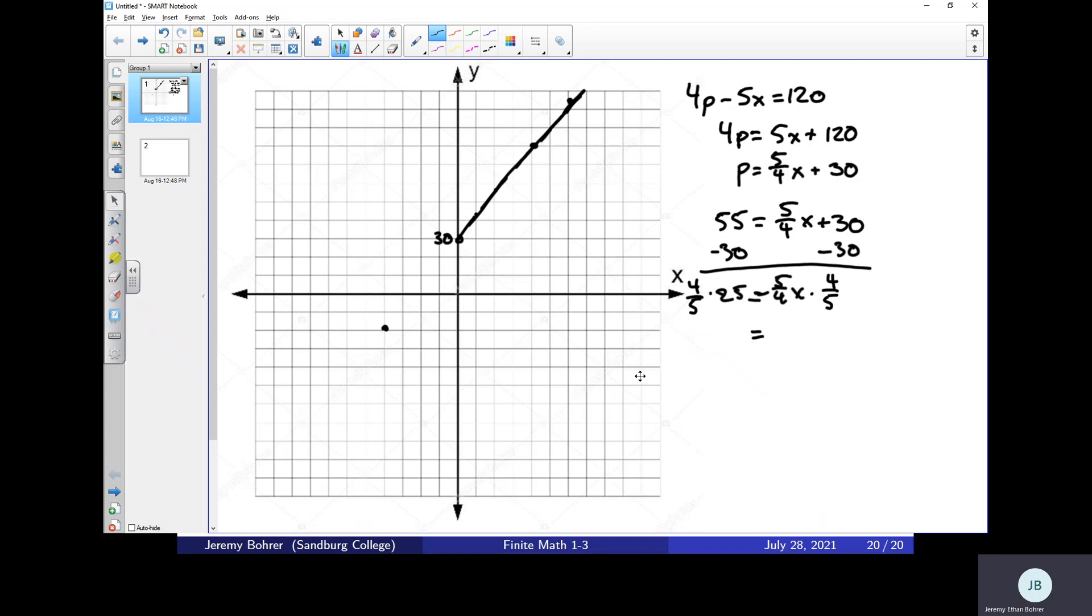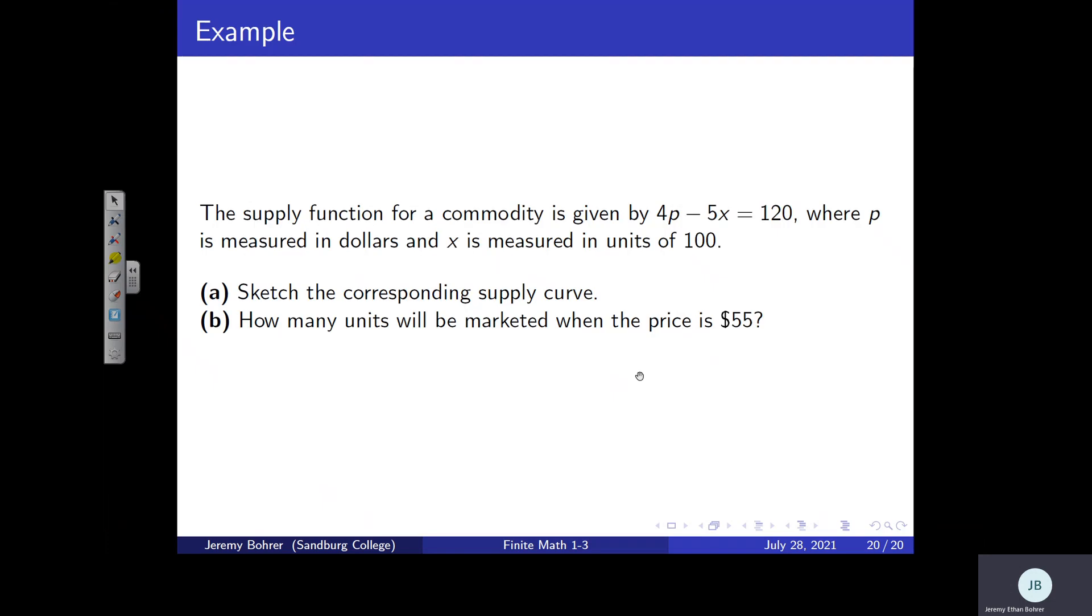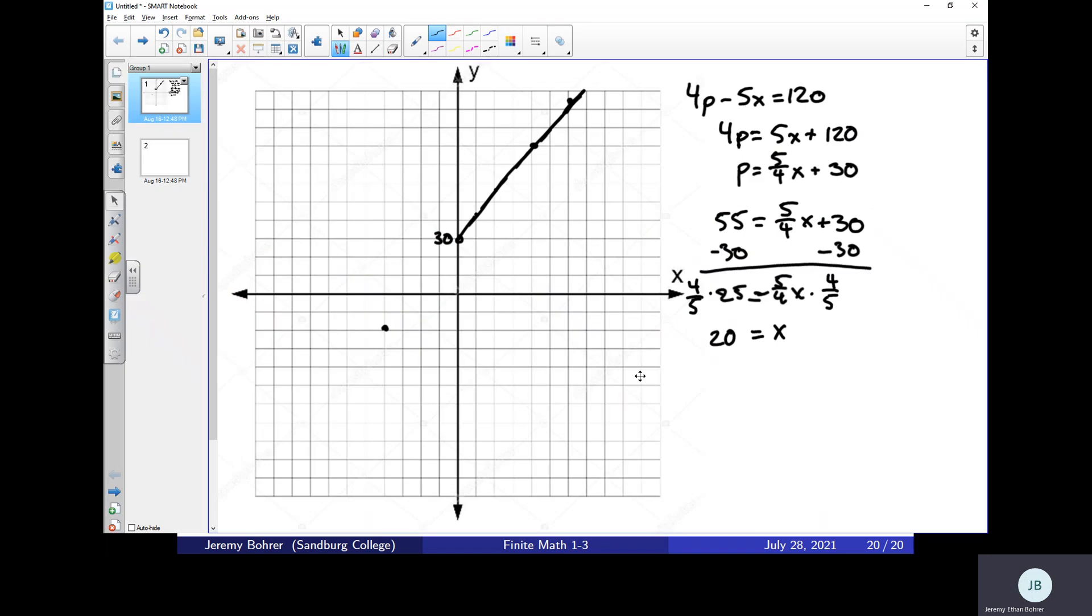Well, 4 fifths times 5 fourths X is just X. 4 fifths of 25 is 20. X is 20, but remember that in our problem description we are looking at X in units of 100. So since X is units of 100, that means X equals 20 is 2,000 units. There's the answer to B.